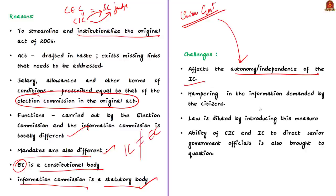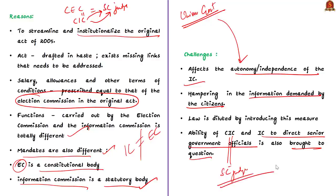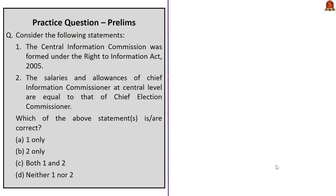By empowering itself to determine tenure, salary, and allowances, the central government is affecting the autonomy and independence of the Information Commission. This may hamper information demanded by citizens. Additionally, by reducing the position of information commissioners from being equal to Supreme Court judges, their ability to direct senior government officials is brought into question. Previously they had more respect and integrity to call on any government official including secretaries. Let us wait and see what the Supreme Court will do with respect to the RTI Amendment Act.